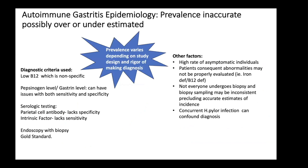When looking at the prevalence and incidence of autoimmune gastritis, the data is very murky. The prevalence is either over- or underestimated. Part of the problem is that prevalence varies depending on study design and the rigor of making the diagnosis. In different studies, the definition of autoimmune gastritis was variable.